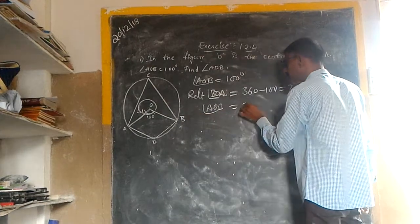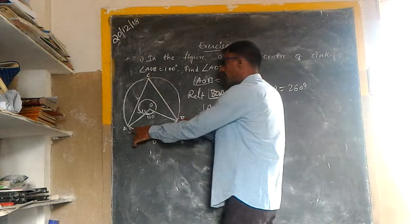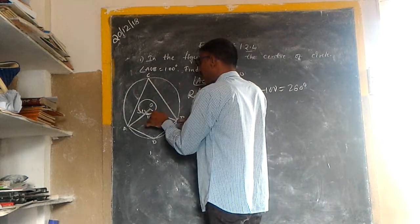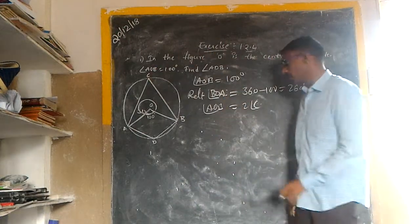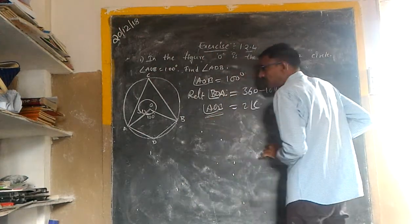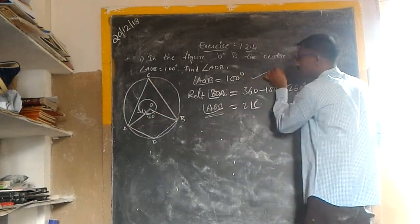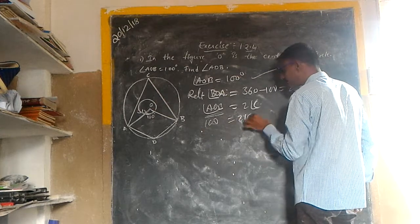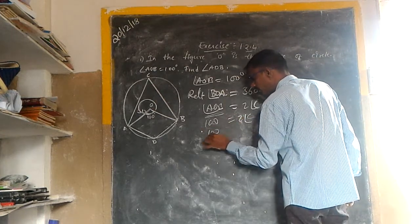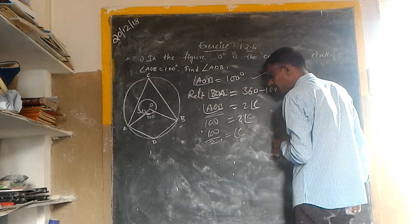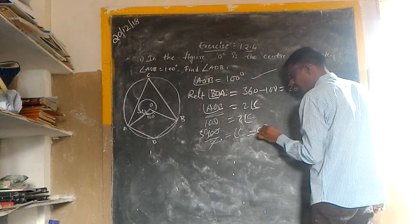Angle AOB is equal to 2 times angle C. Since AOB is 100 degrees, angle ADB — the angle at the circumference — is equal to 50 degrees. So angle ADB equals 50 degrees.